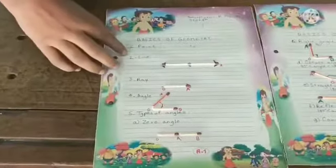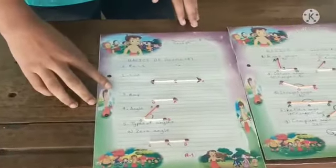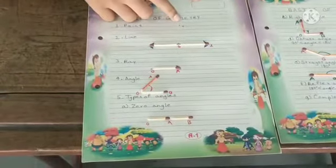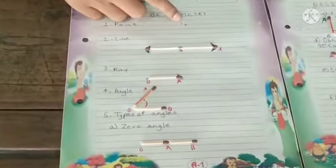I made a project to represent basic concepts of geometry. The first concept of geometry is point. Here we give a dot to represent a point and we name it O.